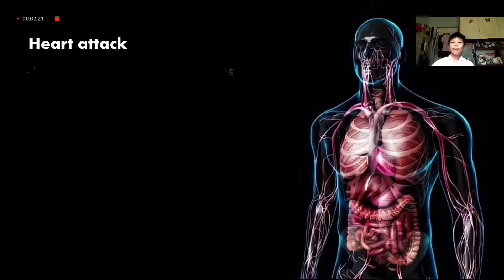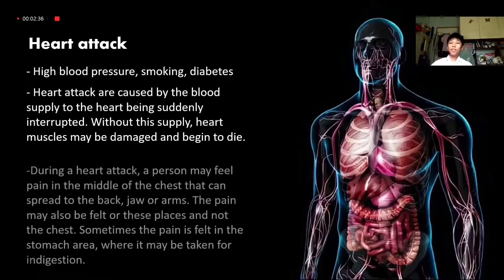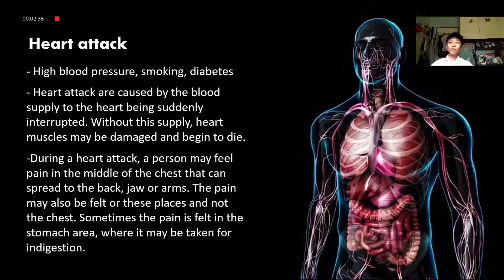They also have one disease that represents the circulatory system: Heart attack. Examples of causes include high blood pressure, smoking, and diabetes. Heart attacks are caused by the blood supply to the heart being suddenly interrupted. Without this supply, heart muscles may be damaged and begin to die. During a heart attack, a person may feel pain in the middle of the chest that can spread to the back, jaw, or arms.